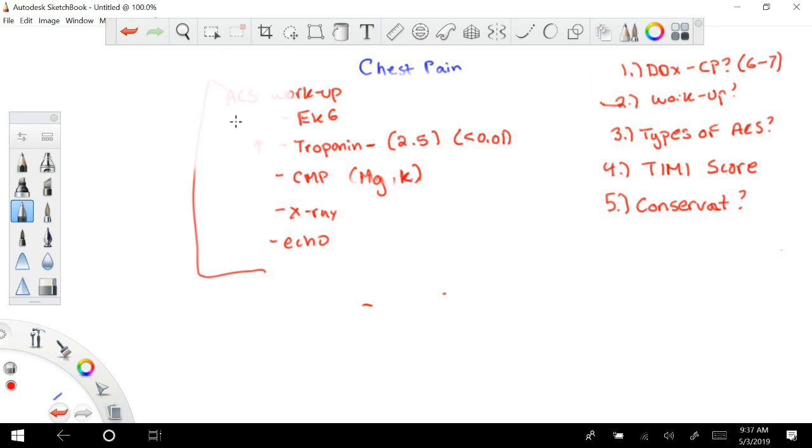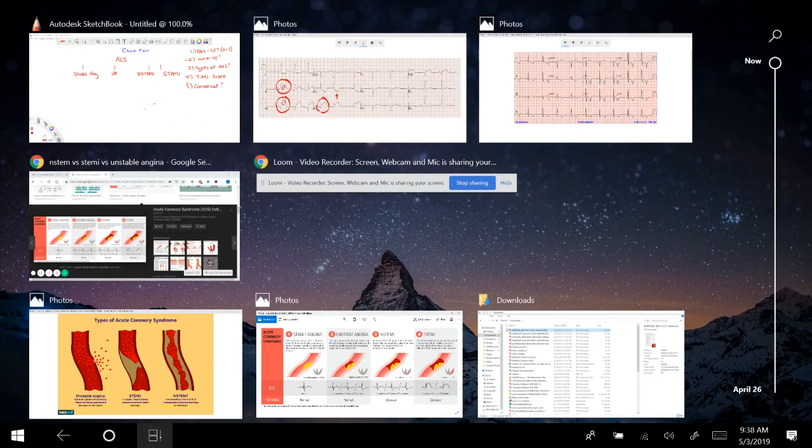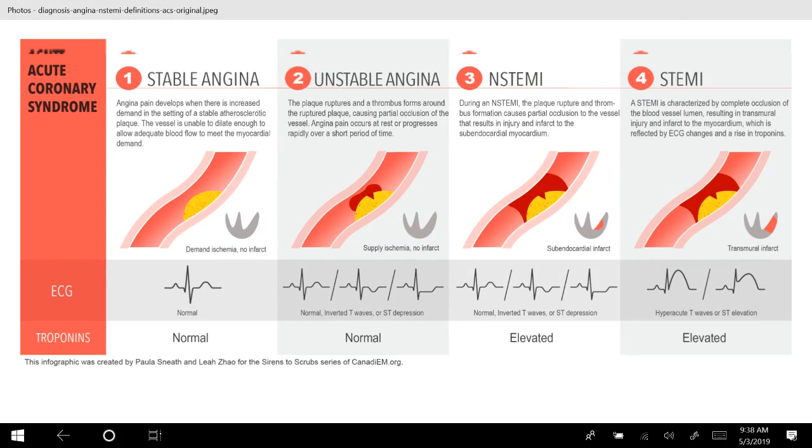But these are going to be some of your basic workups. So now let's talk about number three. What is going to be your essential differentials? What are the types of ACS? So ACS, again, is acute coronary syndrome. And basically, it comes down to four different types. So hopefully, you have already told me the different types, but you have stable angina. You have unstable angina. You have an NSTEMI. And then you have a STEMI. So what are the differences between these?